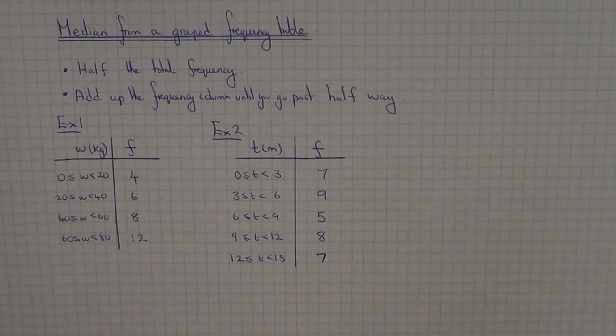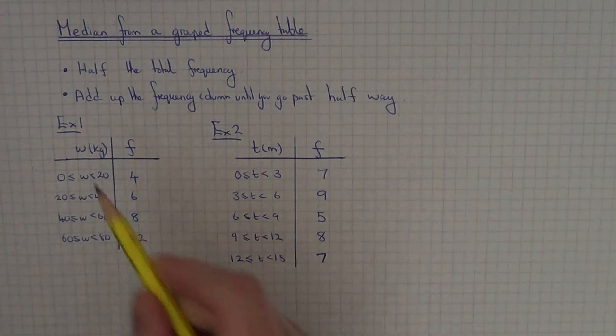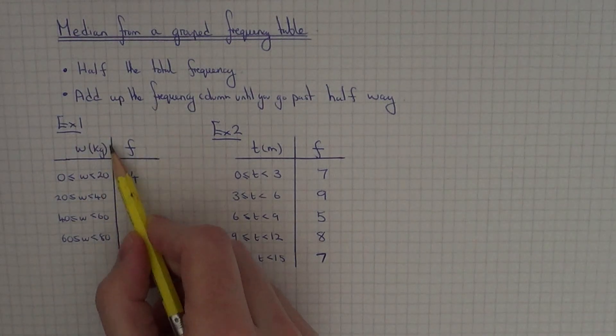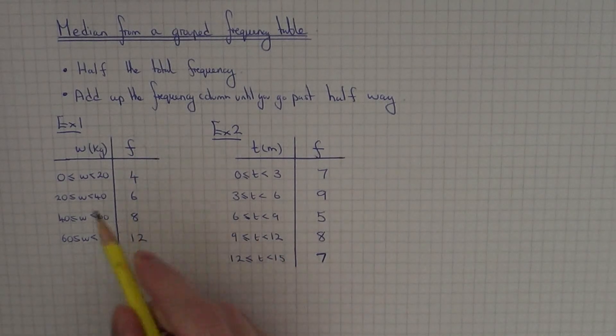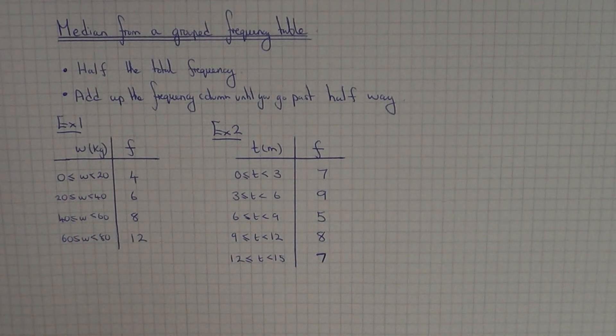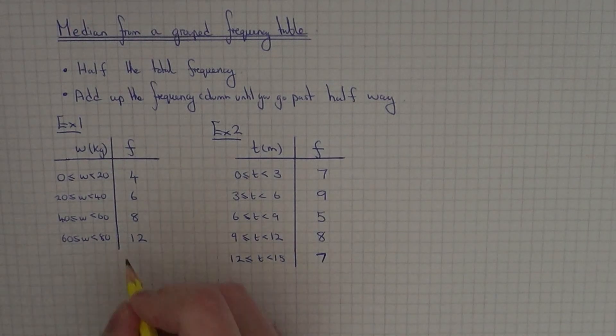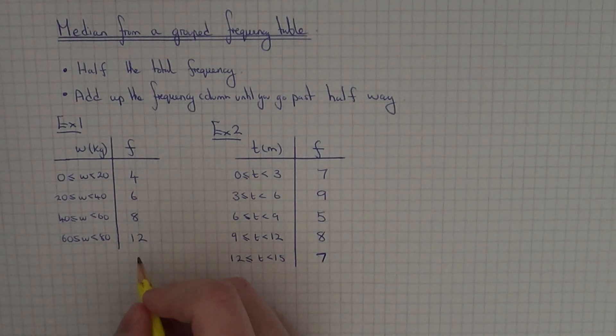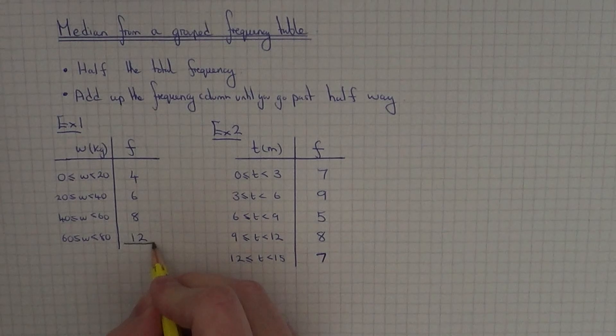The best way to see this is by looking at an example. In example one we've got the weights of a group of people, and the weights go from 0 up to 80 kilograms. The first thing you need to do to find the median class interval is to add up the frequency column.